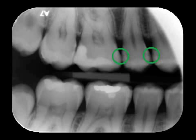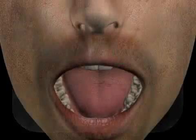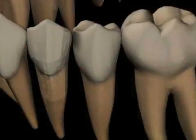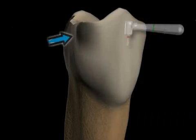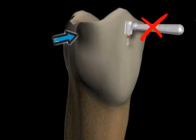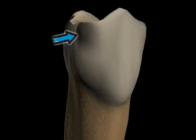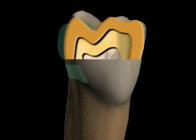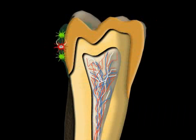Initial caries is a carious lesion that is still limited to the area of the dental enamel. As long as caries are only located in the dental enamel, they can still be treated without any drilling. But how do caries develop to begin with? Plaque is the trigger of caries. Plaque contains bacteria and bacteria products which attack the tooth.